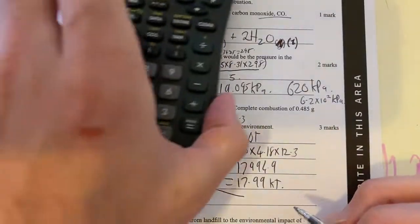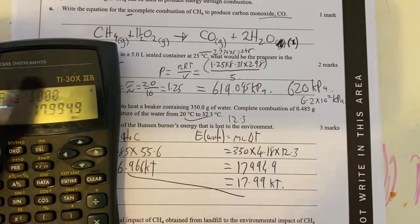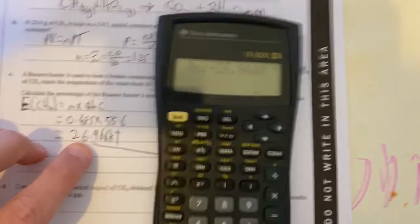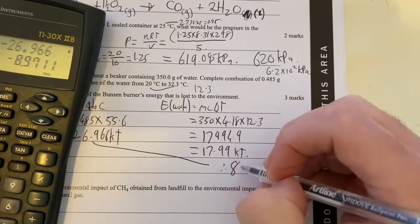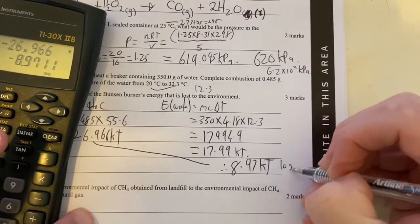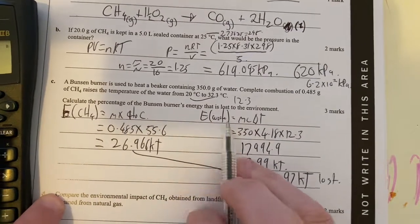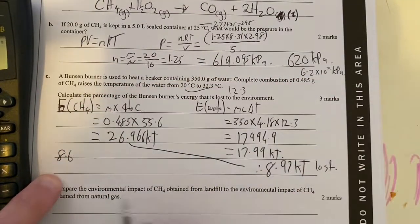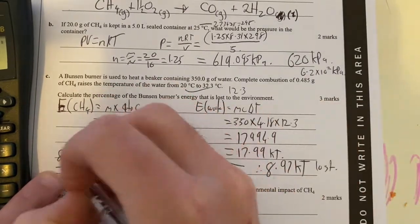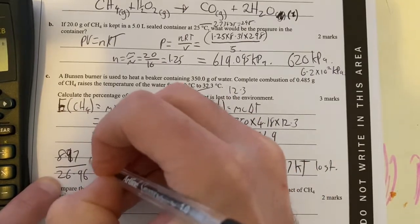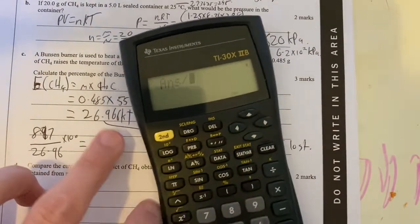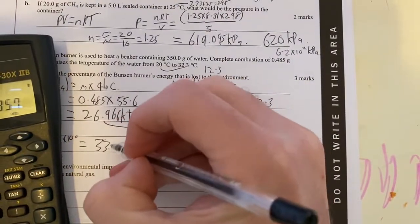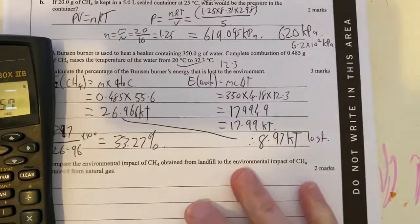All right, so what's the difference between these two numbers? Let's just work out the difference. So divide that by 1,000 to get it into kilojoules. Now, the difference, which is how much energy would have been lost, so take that away from 26.966, that means we had 8.97 kilojoules was lost. I want to know the percentage efficiency or the percentage that was lost. So it would be what was lost divided by the total times by 100, so 8.97 divided by 26.966 times by 100 equals that, gives me 33.27% was lost to the surroundings.